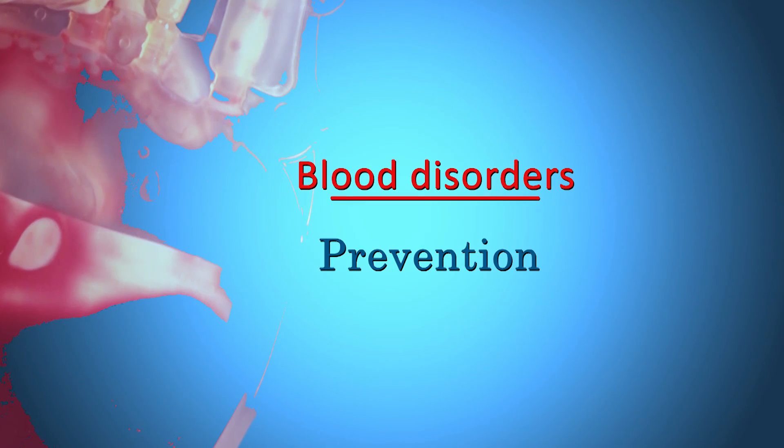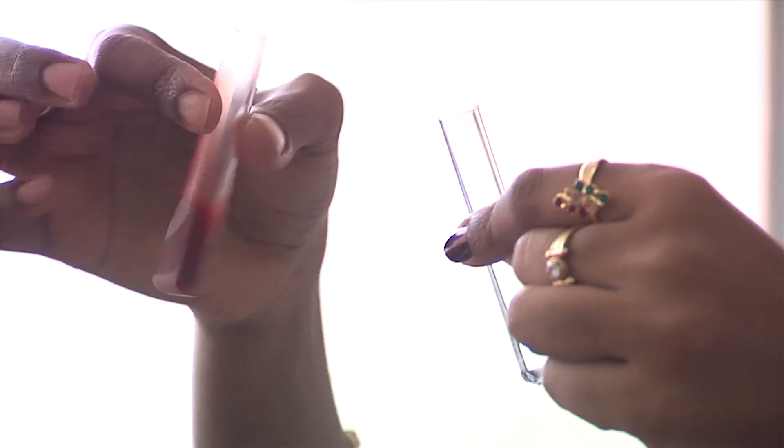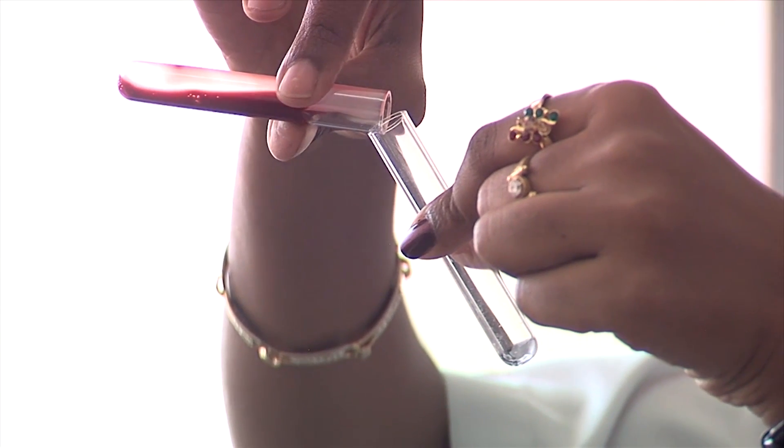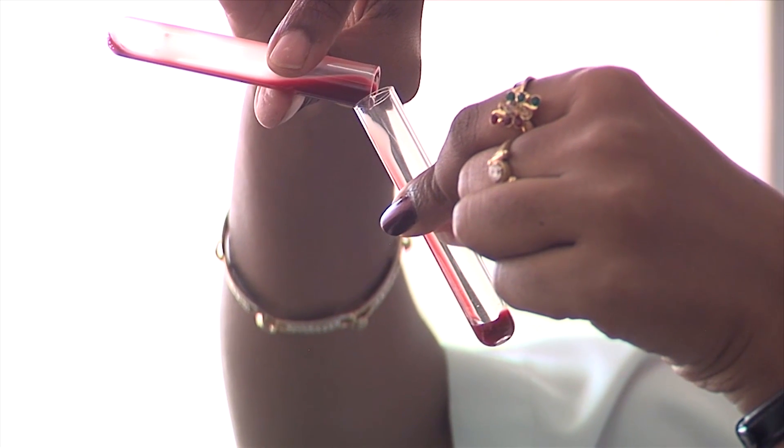How can we prevent blood-related disorders? Most importantly, undergo a blood test before marriage to understand hereditary risk factors by learning about symptoms of certain diseases. And last but not the least, listen to the advice of your doctor and change your lifestyle.